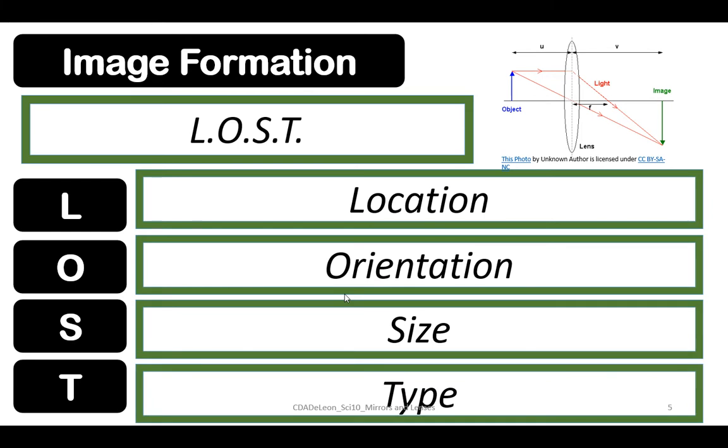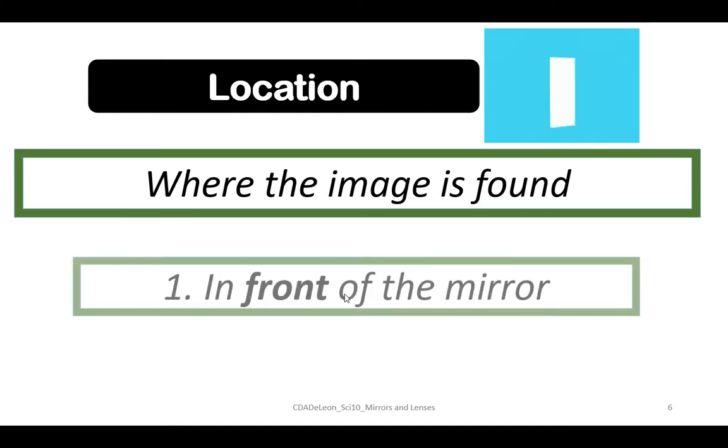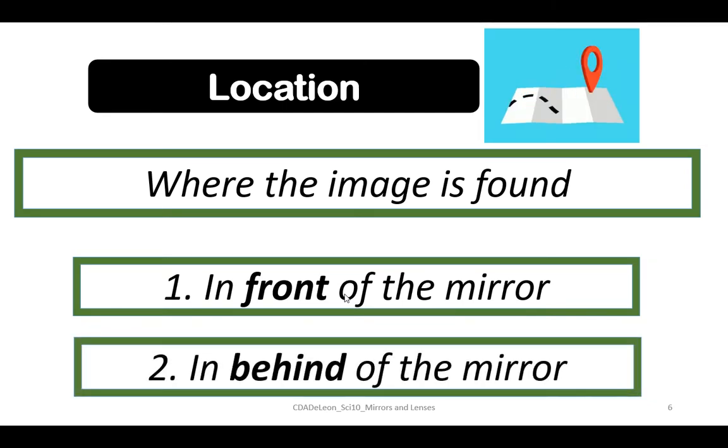Location is where the image is found. We have two types of location: first is in front of the mirror, second is behind the mirror.